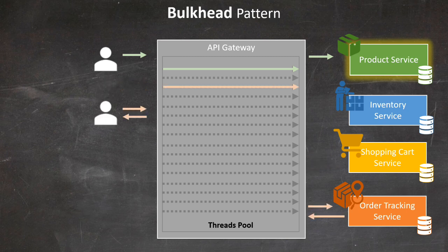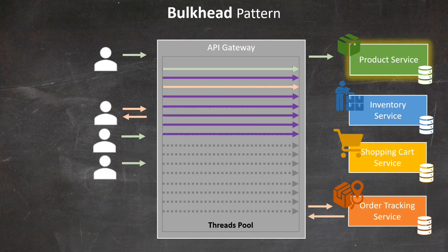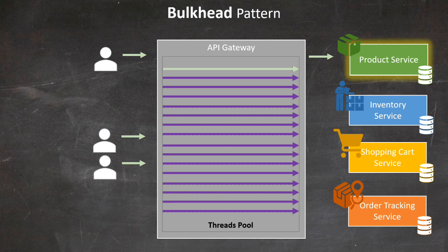An order tracking request comes in and is processed as expected. However, when another payment request comes in, it gets stuck waiting for a response from the slow product service. The same happens with yet another payment request. As more requests come in, they start to pile up. Eventually, our API gateway has to start rejecting requests because all threads are occupied. More legitimate requests are rejected, even those for services that are functioning correctly. This illustrates a critical vulnerability — a problem in one service causes a system-wide failure affecting all services.